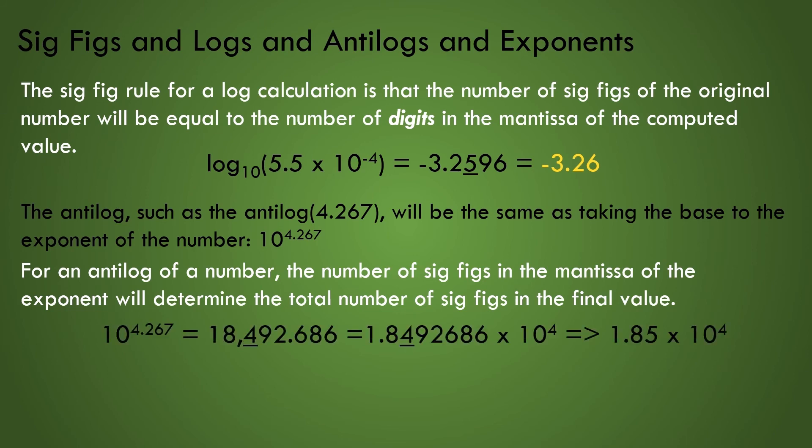In the example shown, we observe that there are only three decimal numbers in the mantissa of the exponent, the .267 part. The rule tells us that we must only have three total sig figs in our final numerical result. When we plug 10 to the power of 4.267 into a calculator, we get a large number, 18,492.686 and sum. We know the final value must only have three sig figs. It is best to rewrite the value in scientific notation to avoid ambiguity, and then we can easily round off to the required three sig figs, obtaining a final value of 1.85 times 10 to the power of 4.